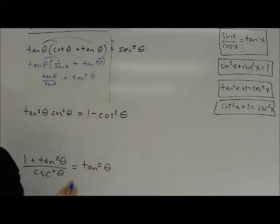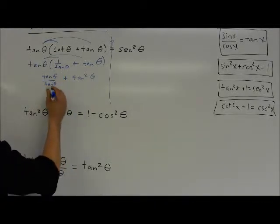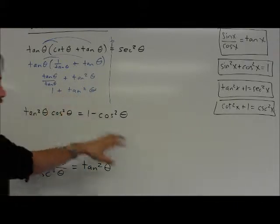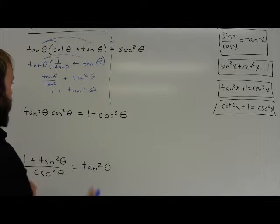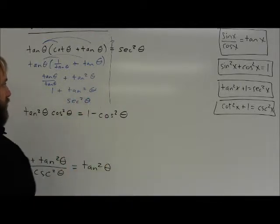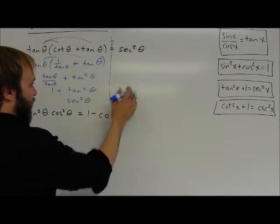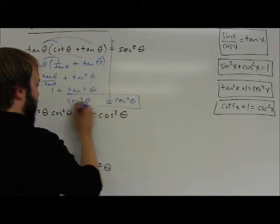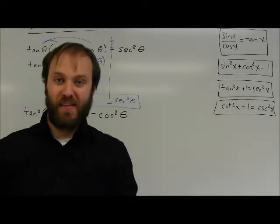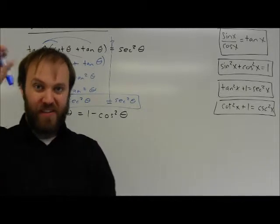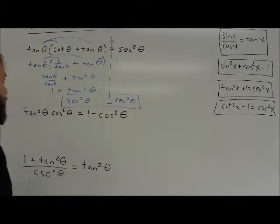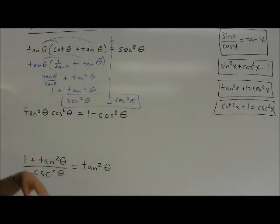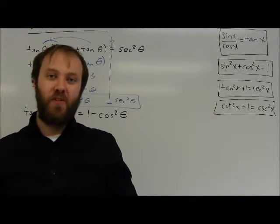Still all equal to secant squared. Tangent over tangent is equal to 1, so I have 1 plus tangent squared of theta. And now I have one of my identities: 1 plus tangent squared of theta equals secant squared of theta. So I can write it equal to secant squared and I'm done. Notice I showed each one of my steps. Unlike a two-column proof, I didn't have to write a reason to the side, but it's clear where I've made my substitutions and where I've multiplied out using the distributive property.